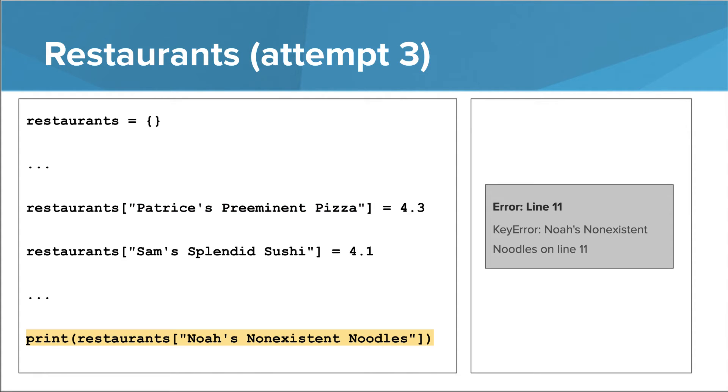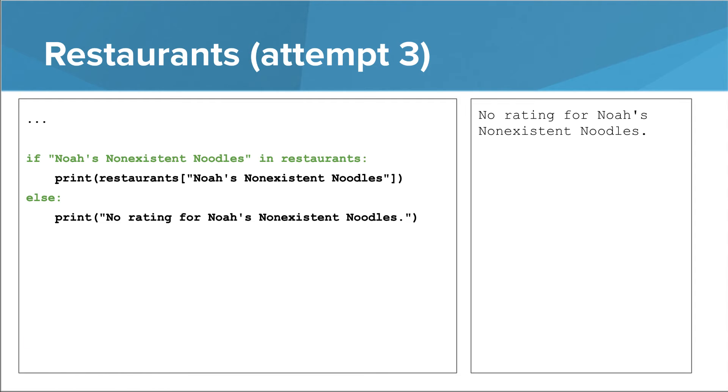If we try to access the value of a key that is not in our dictionary, this causes an error. Turns out we can use the in keyword to check if a particular key is in a dictionary. We can then use an if statement so that we only attempt to access the value of a particular key if that key exists. We could also use a try except statement. In the except block, the exception we need to catch is called key error.